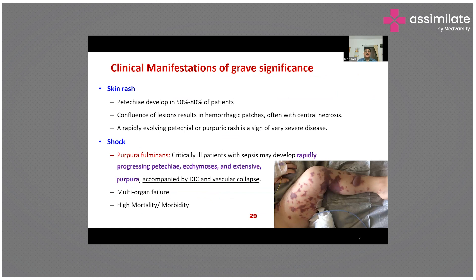Regarding clinical manifestations: skin rashes — specifically petechiae — develop in 50 to 80% of patients, and confluence of these lesions results in hemorrhagic patches, often with cellular necrosis. Rapidly evolving petechiae is a sign of severe disease. A second entity is purpura fulminans, where a critically ill patient with meningococcal sepsis may rapidly develop progressive petechiae, ecchymoses, and extensive purpura, accompanied by DIC and vascular collapse, ultimately leading to multi-organ failure with high mortality and morbidity.